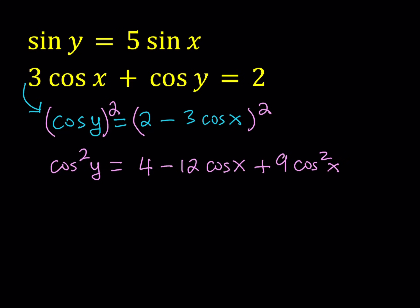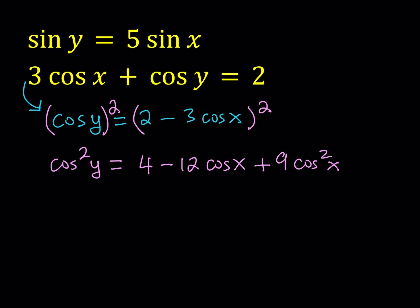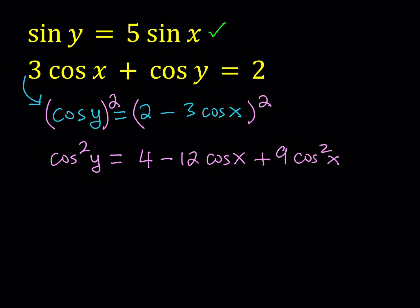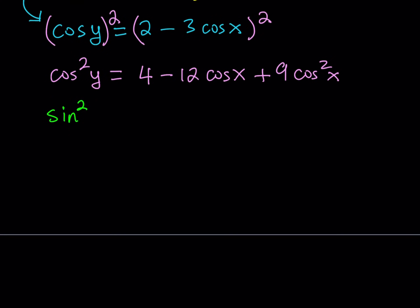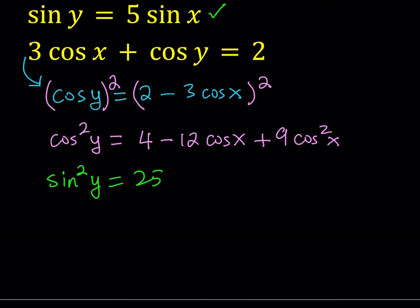Now, this expression has two variables, x and y — cosine x and cosine y — so we do need another equation. Notice that in the first equation we only have sine y and sine x, and in the second one we only have cosine. So we need to convert these using the Pythagorean identity. Let me square the first equation as well: that gives me sine squared y equals 25 sine squared x.